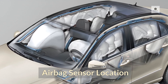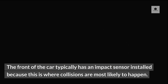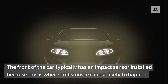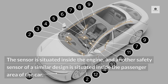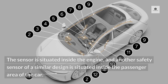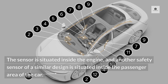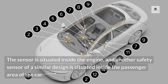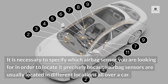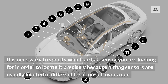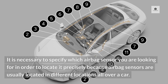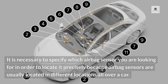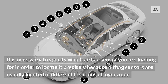Airbag sensor location. The front of the car typically has an impact sensor installed because this is where collisions are most likely to happen. The sensor is situated inside the engine compartment, and another safety sensor of a similar design is situated inside the passenger area of the car. It is necessary to specify which airbag sensor you are looking for in order to locate it precisely, because airbag sensors are usually located in different locations all over a car.